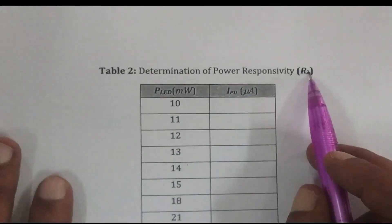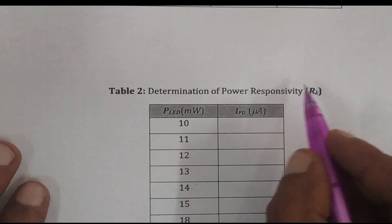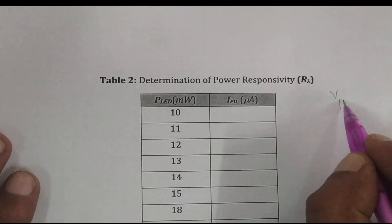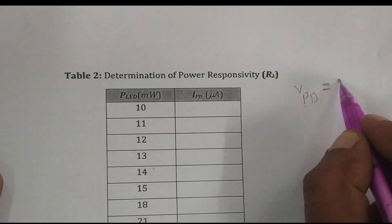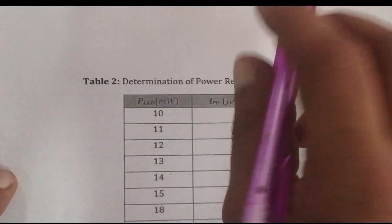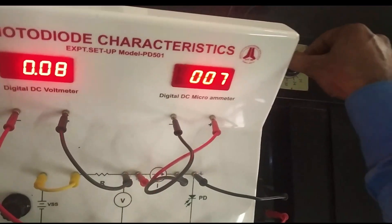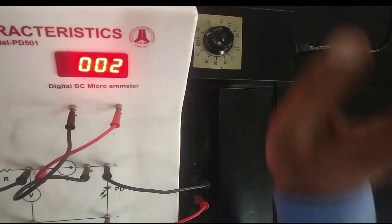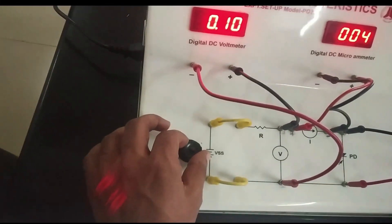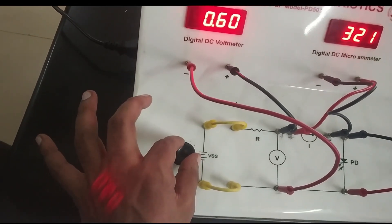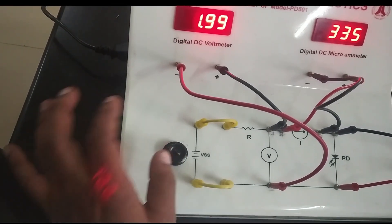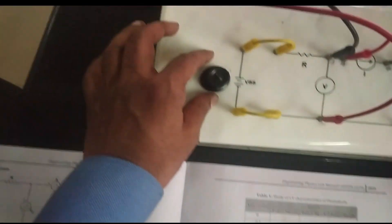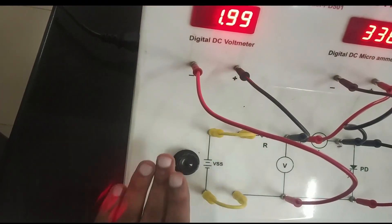Next, to determine the power responsivity, first set V_PD — the reverse potential for the photodiode — to a constant value, for example 2 volts. Bring the LED power to minimum, then apply the reverse potential of 2 volts and keep it constant throughout; do not vary it.